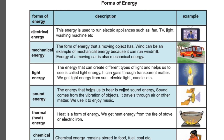Light energy is the energy that can create different types of light and helps us to see. It can pass through transparent matter. We get light energy from the sun, electric light, and candles. Sound energy is the energy that helps us to hear. Sound comes from the vibration of objects and travels through air or other matter. We use it to enjoy music. Thermal energy, or heat energy, is also a form of energy — we get heat energy from the fire of a stove or an electric iron.